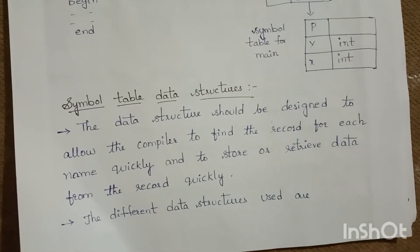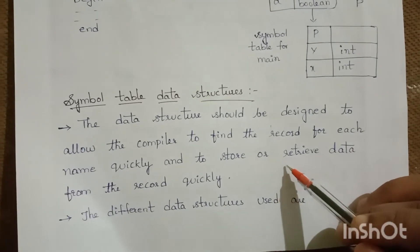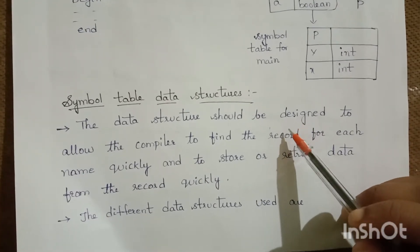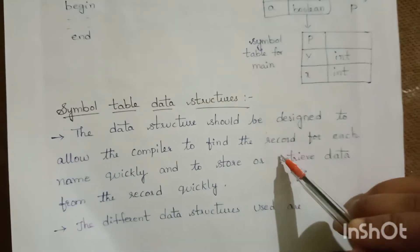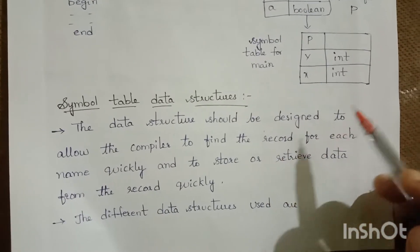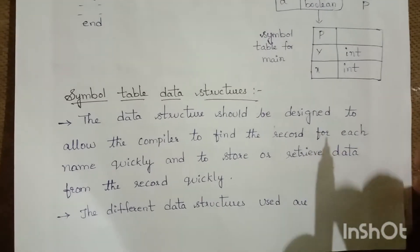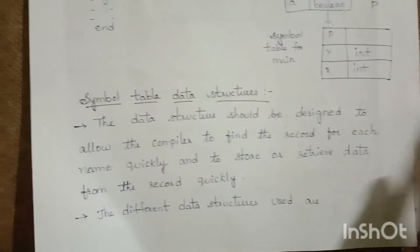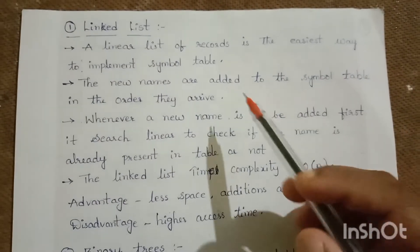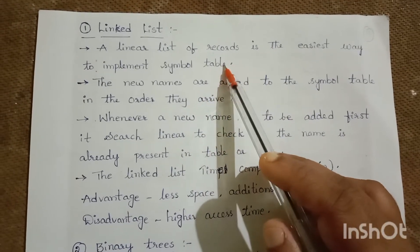Symbol table data structures should be designed to allow the compiler to find the record for each name quickly and to store or retrieve data from the record quickly. The first data structure used in symbol tables is the linked list or linear list. A linear list of records is the easiest way to implement a symbol table.